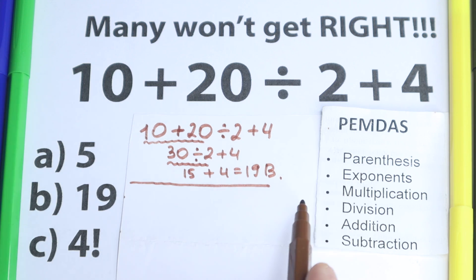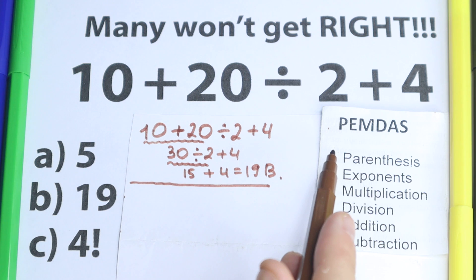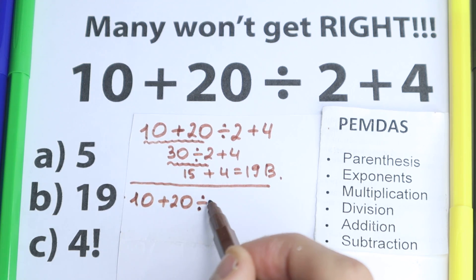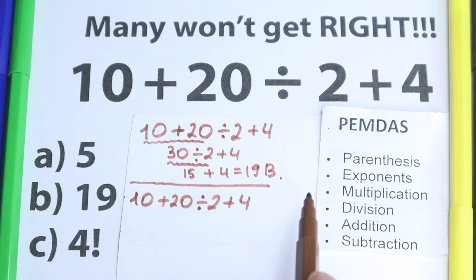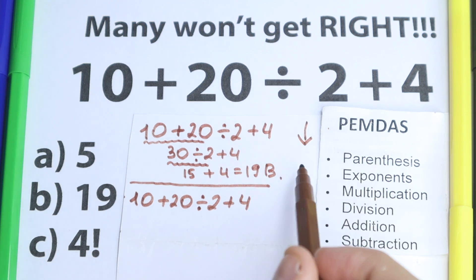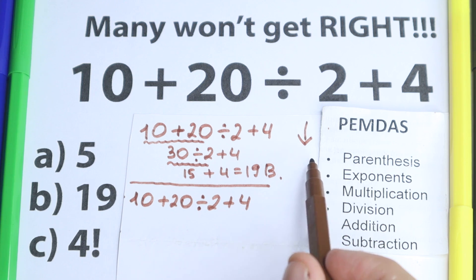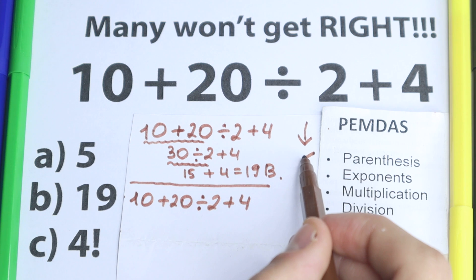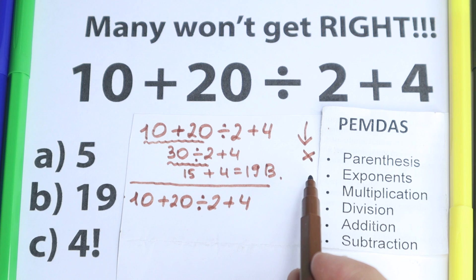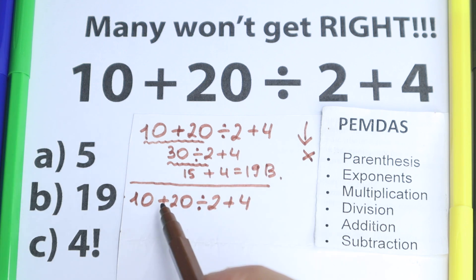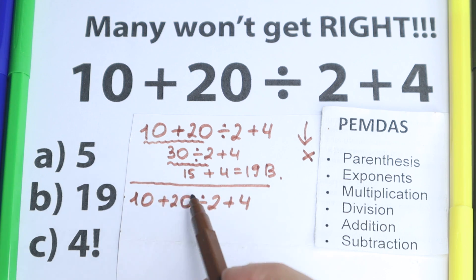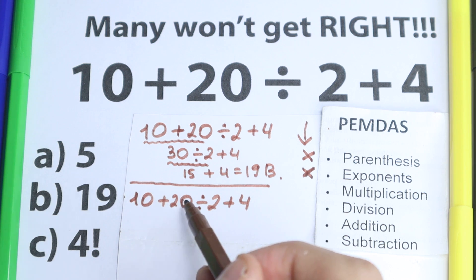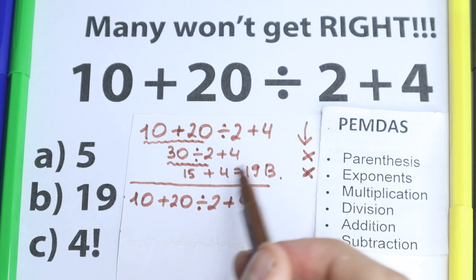Let's solve this question according to the correct order of operations and check it against PMDMC. We have 10 plus 20 divided by 2 plus 4. The first step is parentheses — but I don't see any parentheses, so we skip this step. Next step is exponents — we don't have any squares or cubes, all regular numbers, so we skip this too. For example, if you had 20 to the power of 10, you'd need to evaluate that first — but we don't have it.